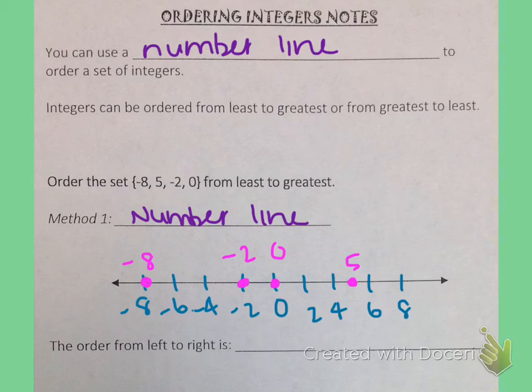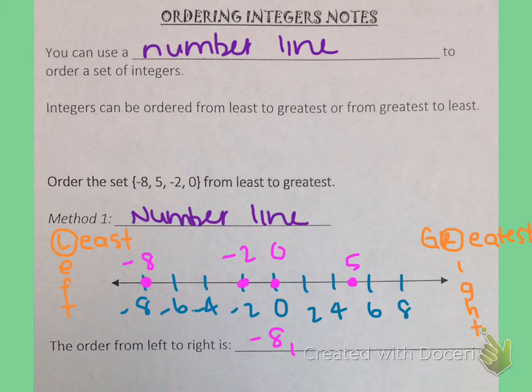This is kind of like a little trick that I use to help me remember what side is what on the number line. So it's a little messy but you get the idea. On the left side that is the least and on the right side that is the greatest. So that's how I remember what is what on my number line. If we're looking from left to right then we're going from least to greatest. And the order from left to right is negative 8, negative 2, 0, and 5.